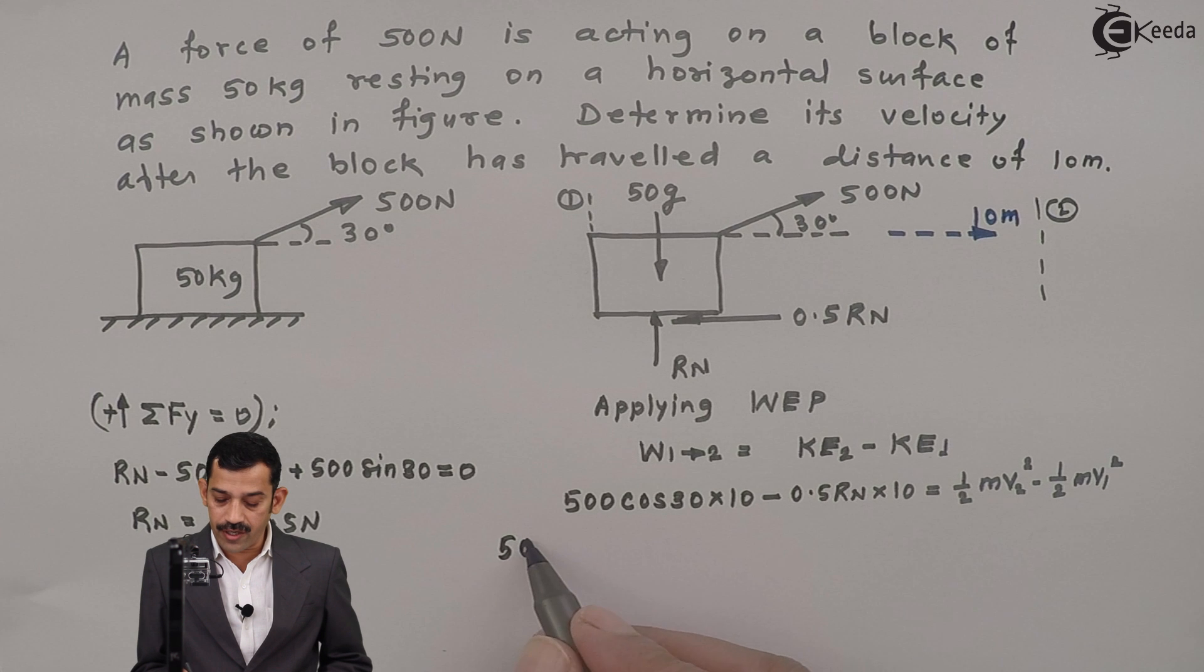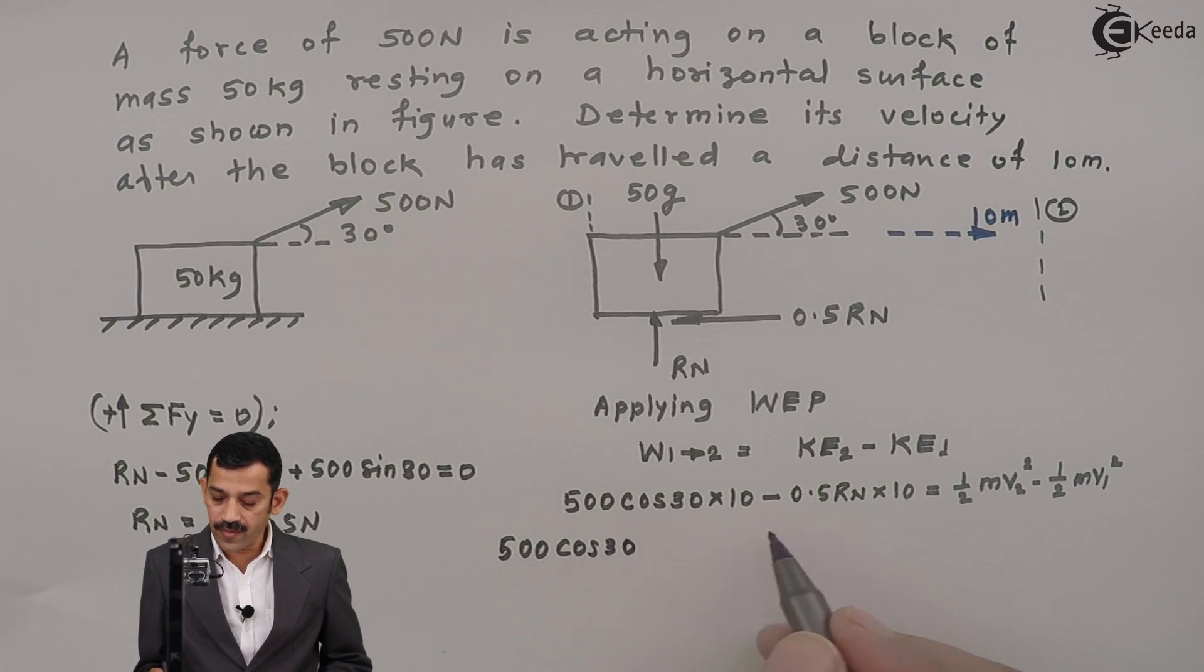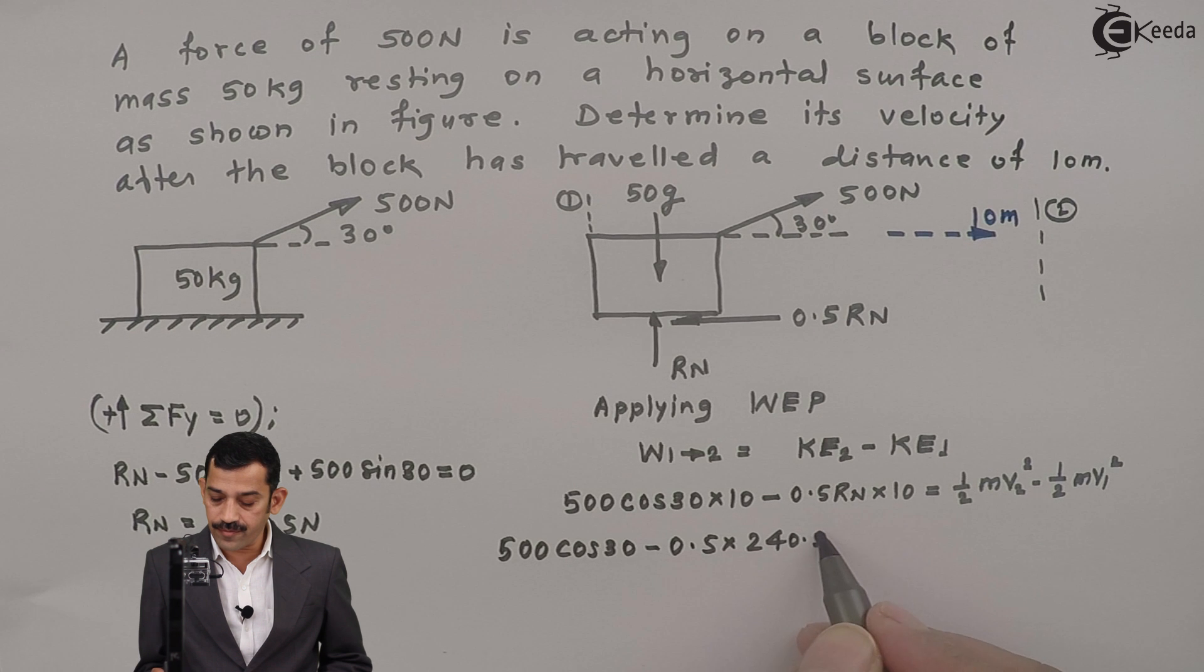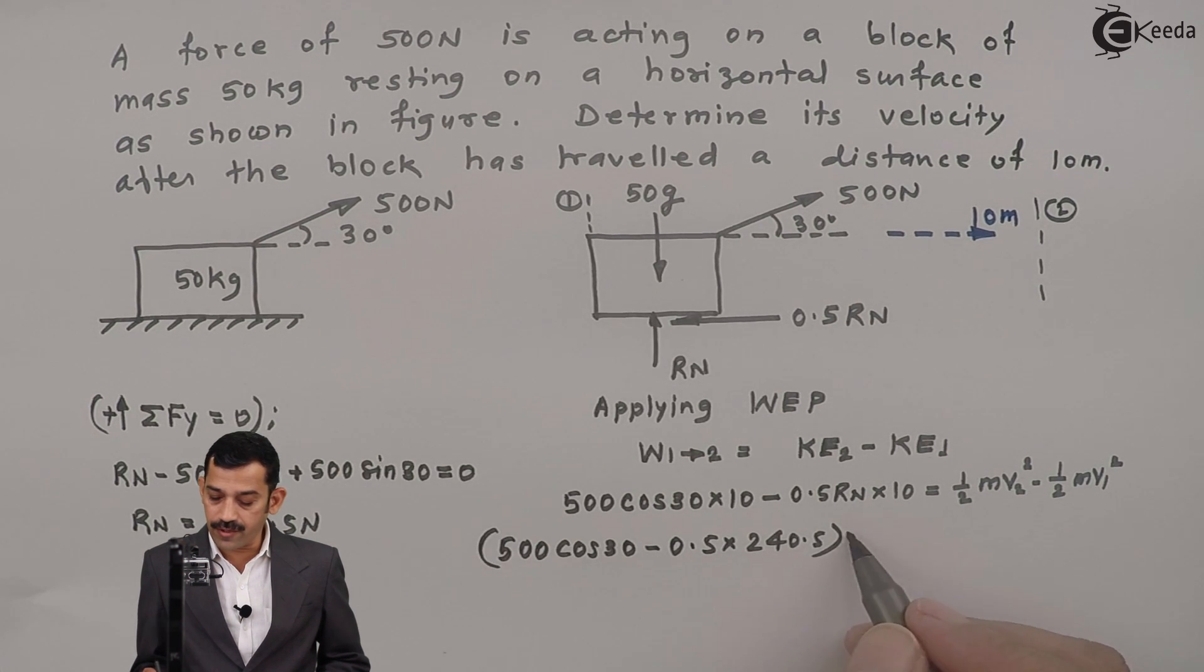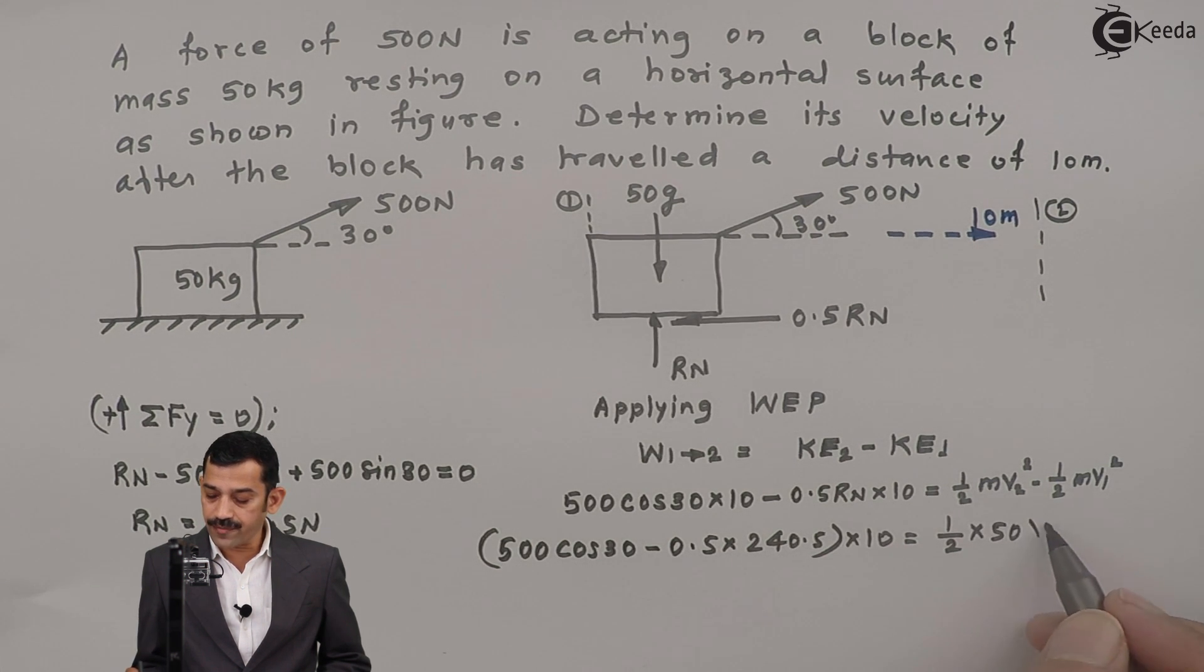That means what we will get here: 500 cos 30 into 10 minus 0.5, Rn is 240.5, multiplied by displacement is 10, equal to half, mass of this block is 50 kg, substitute here 50 V2 square minus 0.